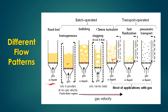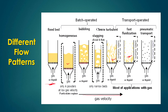Beyond the churn turbulent flow condition, if you increase gas velocity again — perhaps more than 20 times the terminal velocity of the particles — this is called the fast fluidization pattern. There is no particular shape of bubbles or gaps inside the bed; there is a huge gap and a dilute state with churn turbulent conditions. The solid particles try to go upward as small chunks parallelly through the bed. This is called fast fluidization.